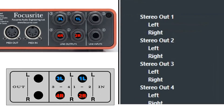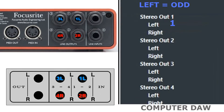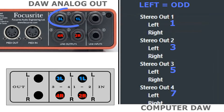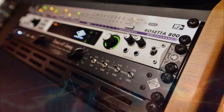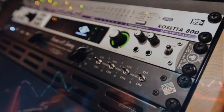Basic routing rule from DAW interface to summing: left channels in the computer equal odd numbers — they always represent the left outputs on the interface and left inputs on the summing mixer. Right channels in the computer equal even numbers — they always represent the right outputs on the interface and right inputs on the summing mixer.